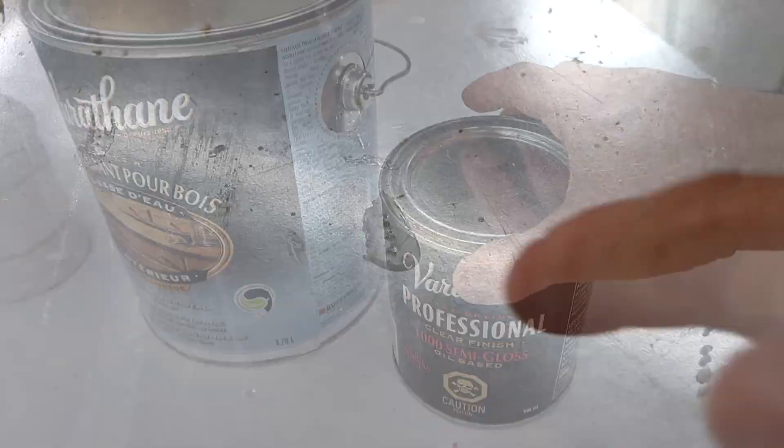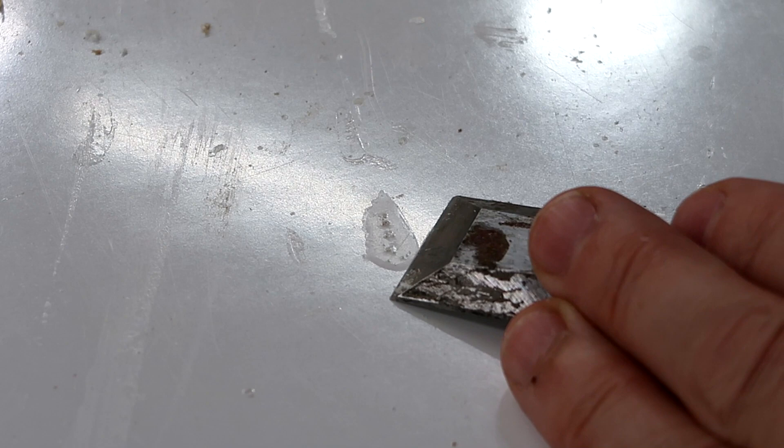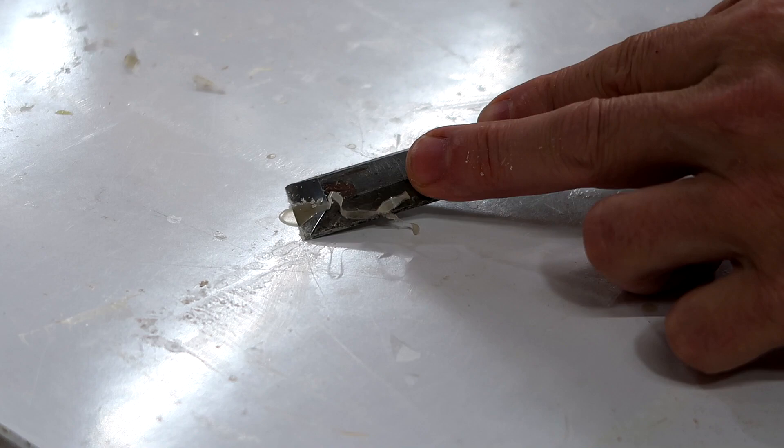So this is an old dribble of the water-based varnish on my workbench, and it seems to just turn into flakes when I scrape it off. And this is an oil-based dribble, and that comes off as one flexible piece. And more water-based dribbles. And more oil-based dribbles.